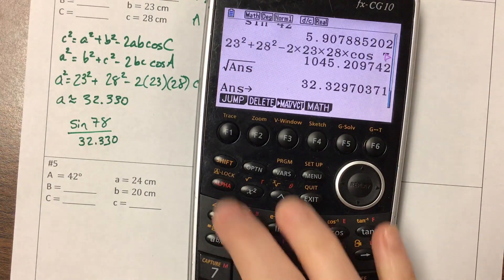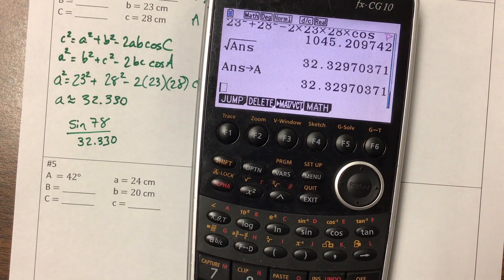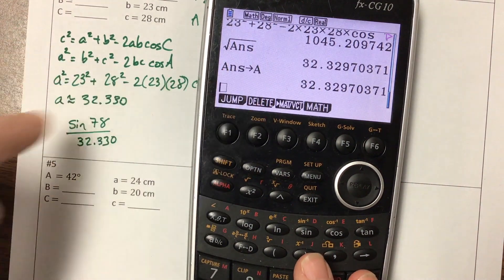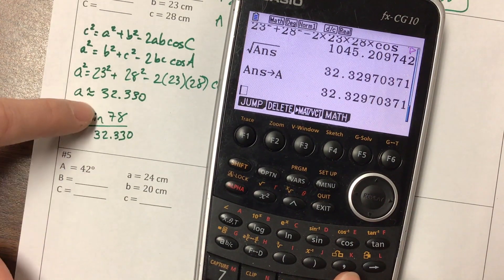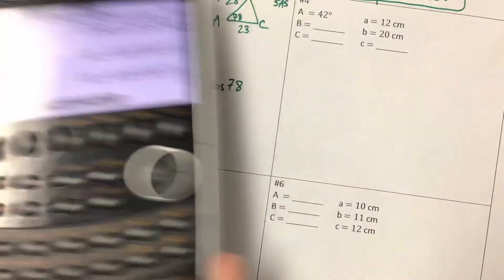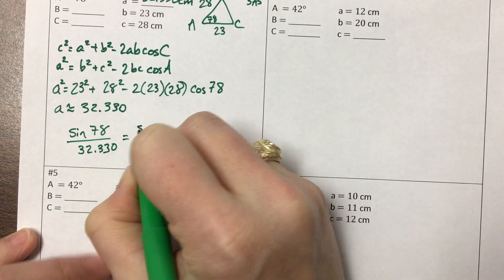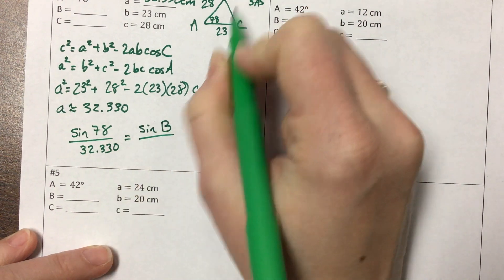I'm using big A because that's what my calculator has. So I have sine of 78° over A—I stored that side length as A—equals sine of B over 23.